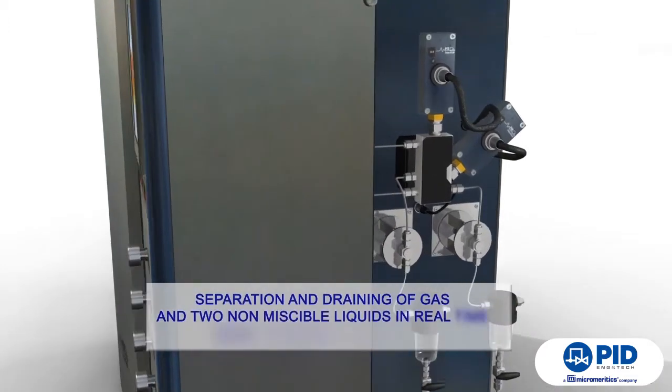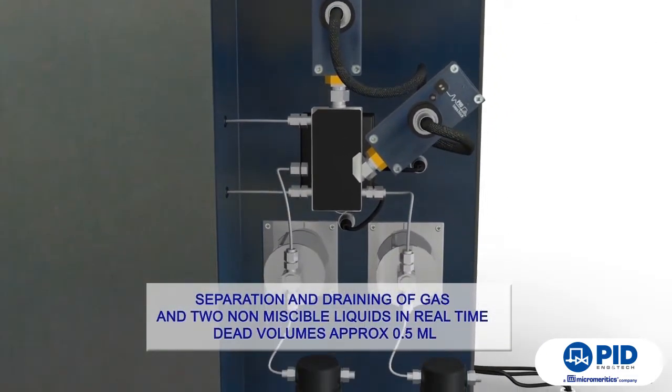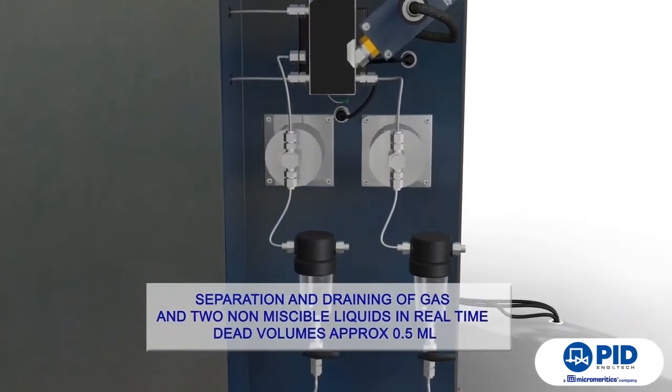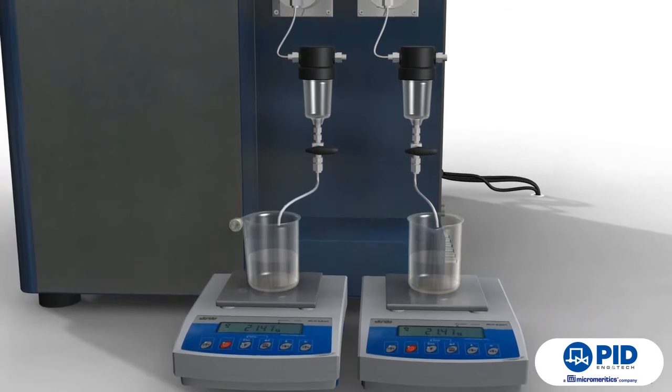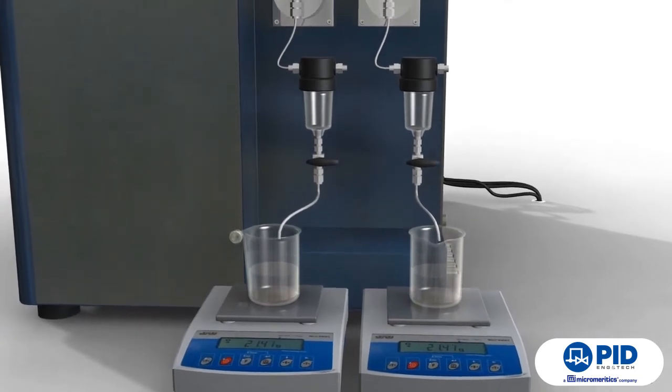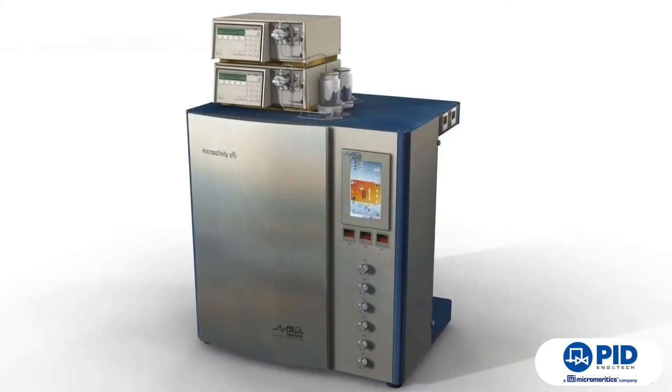The L2 separator is not only able to separate gas from liquid at operating pressure with dead volumes of approximately 0.5 milliliters, but also of separating and draining in real time two non-miscible liquids, controlling the level of each one independently with a very high accuracy.